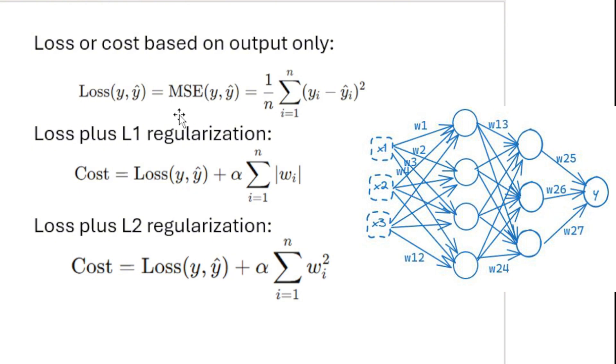So this alpha times whatever regularization you have, in this case L1 regularization, that is summed up with the regular loss function. Here, let's say we are using mean squared error as the loss function, and that becomes our new loss or the cost. So this whatever loss we have that is coming from the output plus L1 regularization.